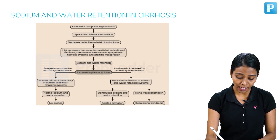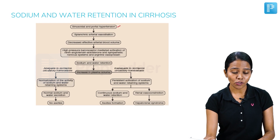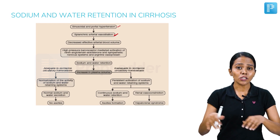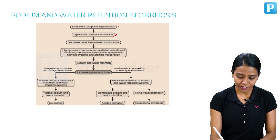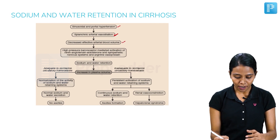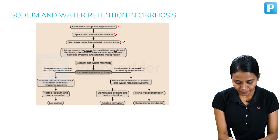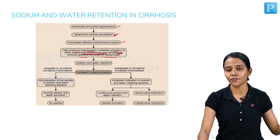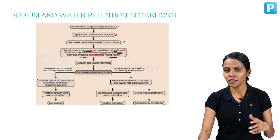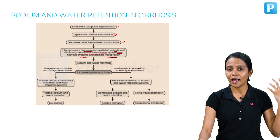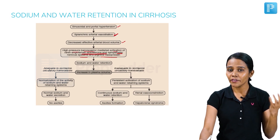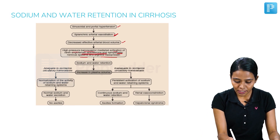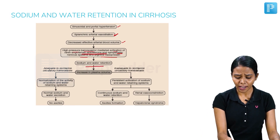In cirrhosis, there is sinusoidal and portal hypertension, because of which splanchnic arterial vasodilation occurs. All the blood accumulates in the splanchnic circulation, leading to decreased effective arterial blood volume in the rest of the circulation. The high-pressure baroreceptors activate the renin-angiotensin-aldosterone system, sympathetic nervous system, and ADH. Whenever there is low pressure, baroreceptors are activated and the kidney releases renin, which subsequently produces aldosterone. There is also secretion of ADH and increased sympathetic activity, leading to sodium and water retention and increased plasma volume.